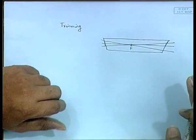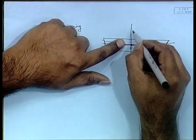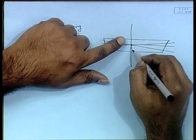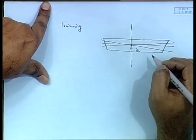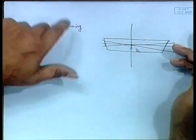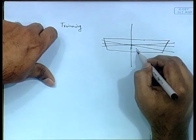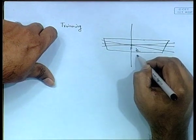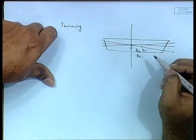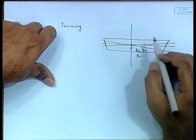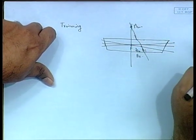In trim, we talk about everything in longitudinal terms. Initially G is somewhere — in trim problems, G is usually not at the center of flotation. Because of trimming, B shifts to a new point B1. Drawing a vertical from the new B position, it hits a point we call ML, the longitudinal metacenter.